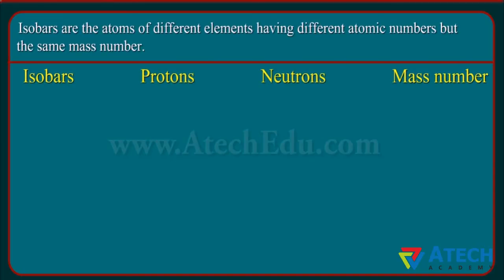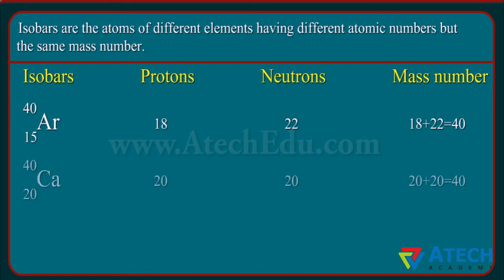Isobars are atoms of different elements having different atomic numbers but the same mass number. Consider argon and calcium: the atomic number of calcium is 20 and of argon is 18 — the number of electrons in these atoms is different — but the mass number of both elements is 40. That means the total number of nucleons is the same in the atoms of these elements.